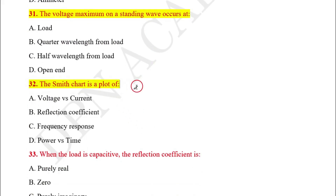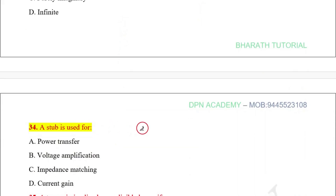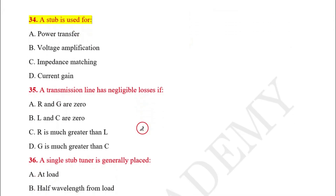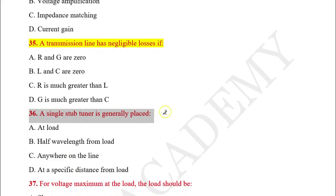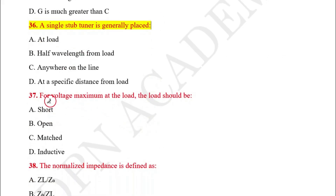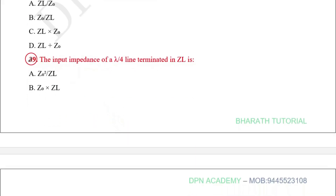Question number thirty-two — this was also discussed in a previous question. Question number thirty-three: When the load is capacitive, the reflection coefficient is? Question number thirty-four: A stub is used for? Question number thirty-five: A transmission line has negligible losses if? Question number thirty-six: A single stub tuner is generally placed? Question number thirty-seven: For voltage maximum at the load, the load should be? Question number thirty-eight: The normalized impedance is defined as — important. Question number thirty-nine: The input impedance of a lambda/4 line terminated in Z_L is?